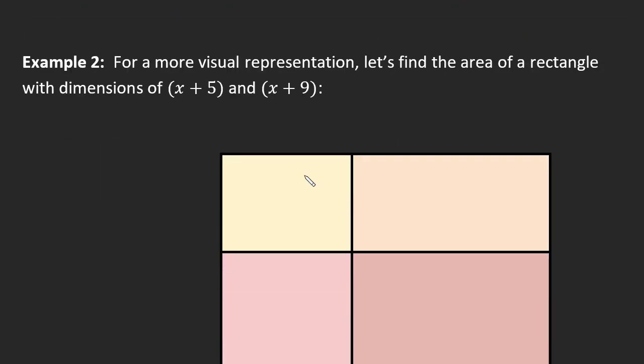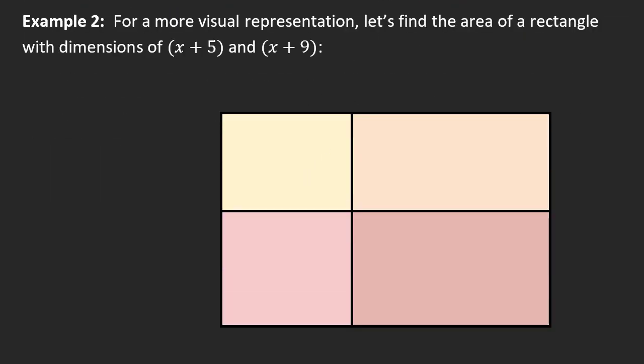Alright, so let's practice that with a visual representation this time. So in this one here I've been asked to find the area of a rectangle that has dimensions of x plus 5. So let's say this is x plus 5. So the idea here is that this side length here is a side length x. This side length here is a side length 5. And then we have an x plus 9. So this is a side length x as well. And this is a side length 9. And so if we wanted the area of the large rectangle, what we can do is we can split it up into its smaller bits.